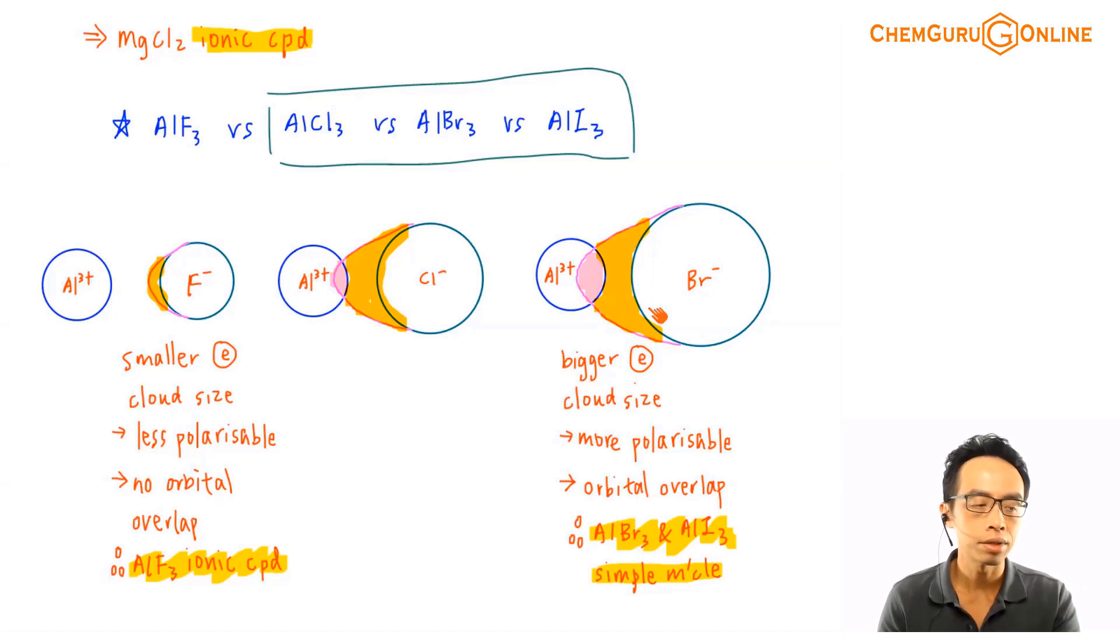In most of the other instances, what the question will do is they'll give you the physical property, and based on the physical property, we can deduce whether it is an ionic bond or an ionic bond with covalent character, or whether this is a covalent bond with an ionic character.